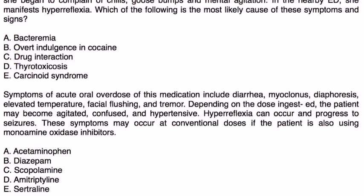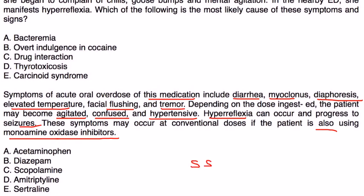The last one: symptoms of acute overdose of this medication include diarrhea, myoclonus, diaphoresis, elevated temperature, facial flushing, and tremor. Depending on the dose ingested, the patient may become agitated, confused, hypertensive. Hyperreflexia can occur and progress to seizures. These symptoms may occur at conventional doses if the patient is also using monoamine oxidase inhibitors.